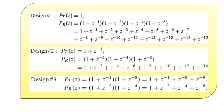In Design 2, P_t(z) = (1+z^−1) and P_r(z) = (1+z^−2)(1+z^−4)(1+z^−8), which gives P_r(z) = 1 + z^−2 + z^−4 + z^−6 + z^−8 + z^−10 + z^−12 + z^−14. In Design 3, P_t(z) = (1+z^−1)(1+z^−8) and P_r(z) = (1+z^−2)(1+z^−4), giving P_t(z) = 1 + z^−1 + z^−8 + z^−9 and P_r(z) = 1 + z^−2 + z^−4 + z^−6.